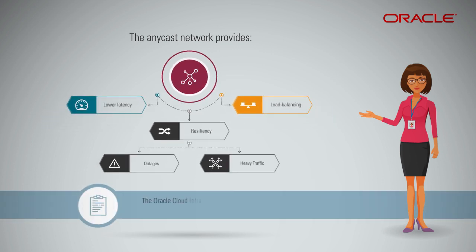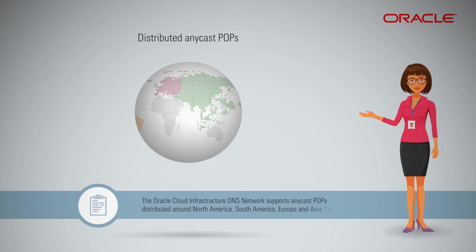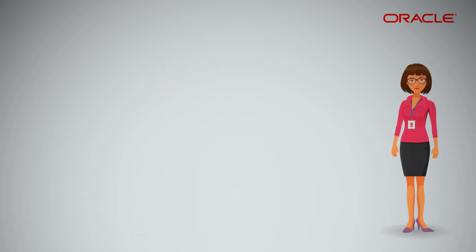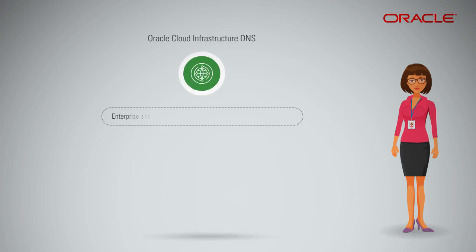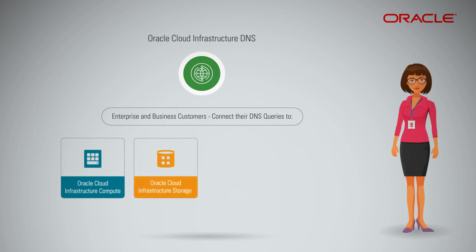The Oracle Cloud Infrastructure DNS network supports Anycast point-of-presence pops distributed around North America, South America, Europe, and Asia-Pacific. By configuring Oracle Cloud Infrastructure DNS, enterprise and business customers can support DNS resolution for various kinds of assets, such as Oracle Cloud Infrastructure Compute, Oracle Cloud Infrastructure Storage, as well as third-party and private assets.